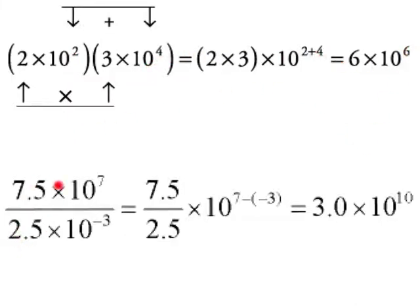In this one, we're going to divide 7.5 divided by 2.5, which is 3. And then we have 10 to the 7th and 10 to the negative 3rd.